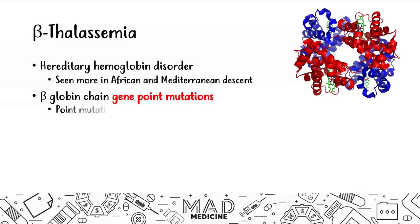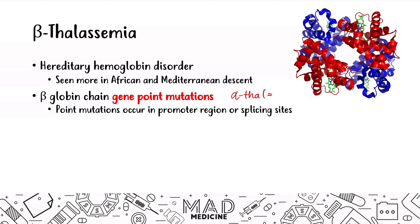Now the beta globin chain is going to have gene point mutations in beta thalassemia, and these point mutations are going to occur in the promoter region or the splicing sites. For alpha thalassemia, you're going to have gene deletions — meaning the whole gene is going to be deleted. In beta thalassemia, you're going to have point mutations. This is high-yield because you might be tested on this.